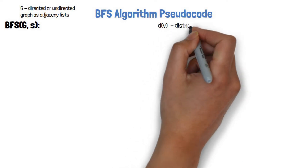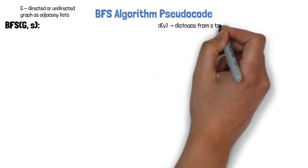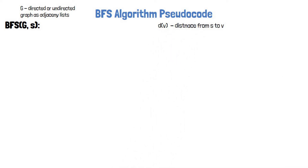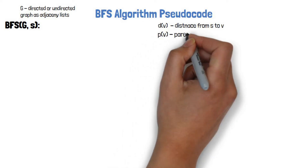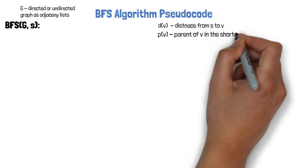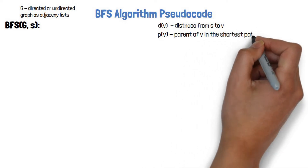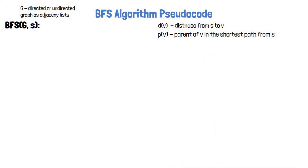We save two pieces of data for each vertex: D, the distance between S and that vertex, and P, the parent of the vertex in the shortest path from S to that vertex, which we discover during the BFS run.